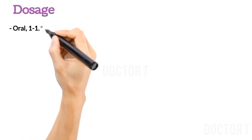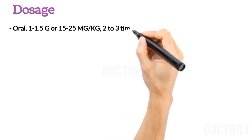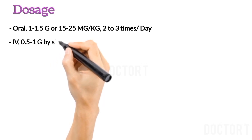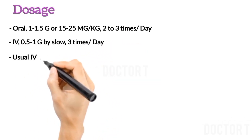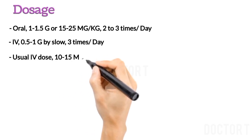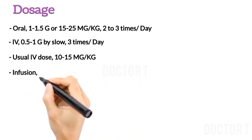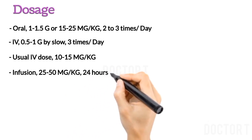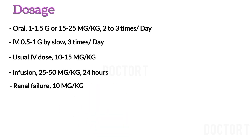Dosage — Oral: 1 to 1.5 gram or 15 to 25 mg per kg, 2 to 3 times per day. IV: 0.5 to 1 gram by slow injection, 3 times per day. Usual IV dose: 10 to 15 mg per kg. Infusion: 25 to 50 mg per kg over 24 hours. In renal failure: 10 mg per kg.